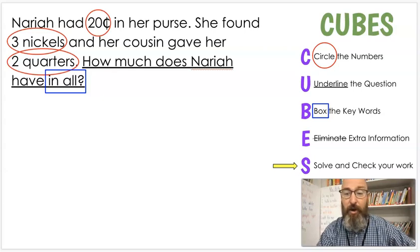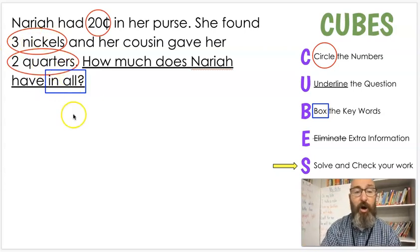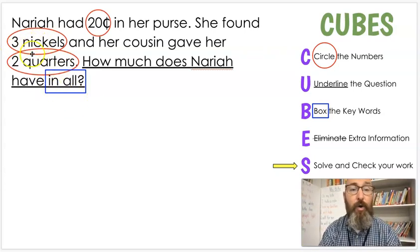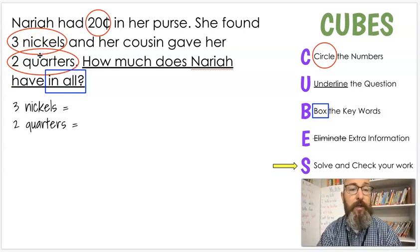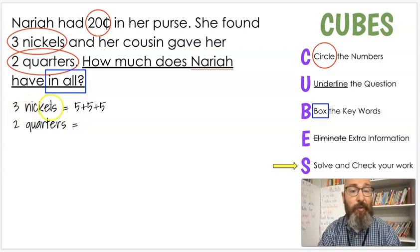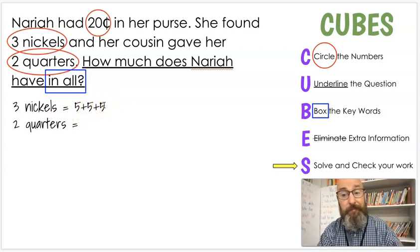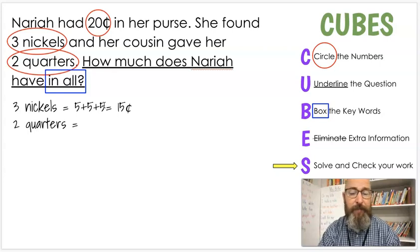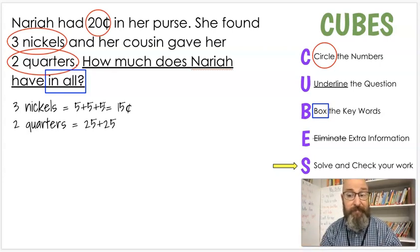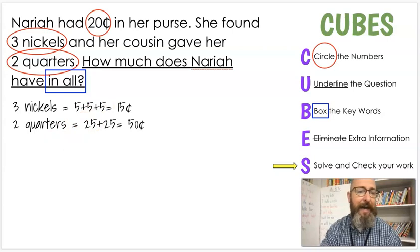E is for eliminate any extra information. Do you see any extra information in this one? I don't see anything extra. So there's nothing to eliminate. So last is going to be solve and check our work. Now, because we have coins again, we can't solve. We can't add until we know what all these coins are worth. So we know she has three nickels and two quarters. We know that nickels are worth five cents each. So we're going to add it three times. Five plus five plus five. Five plus five we know is ten. Ten plus five is 15 cents.